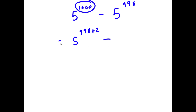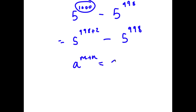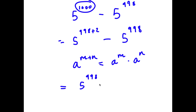So now I have 5 to the power of 998 plus 2 minus 5 to the power of 998. Using the rule that a to the power of m plus n equals a to the power of m times a to the power of n, 5 to the power of 998 plus 2 equals 5 to the power of 998 times 5 to the power of 2.